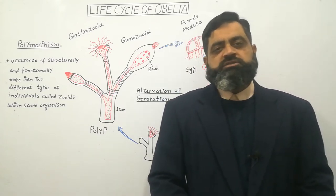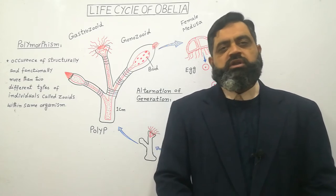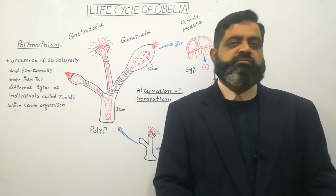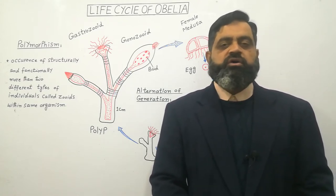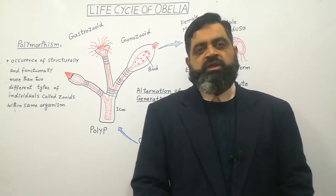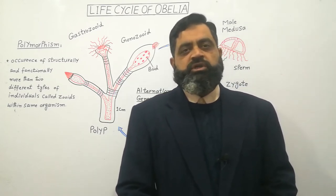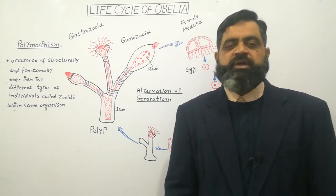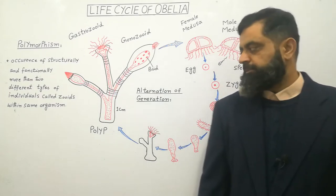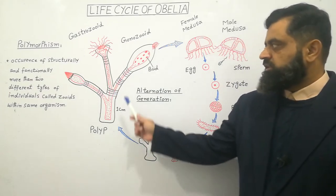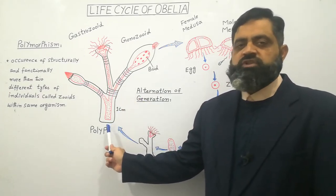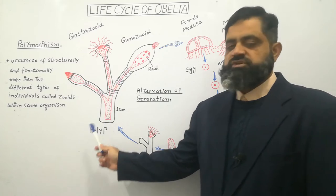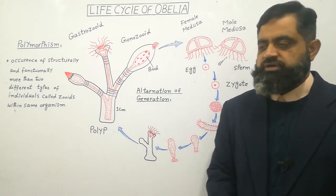Obelia is a small colonial animal which belongs to Phylum Cnidaria. They are colonial organisms present in the ocean's marine water only. They are attached to a substratum with the help of a disc-like structure which is also known as Hold Fast.